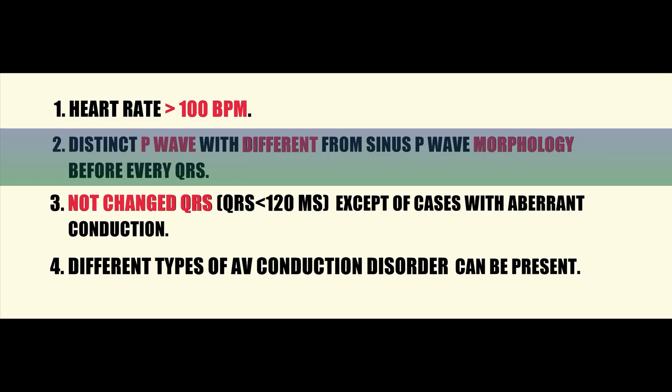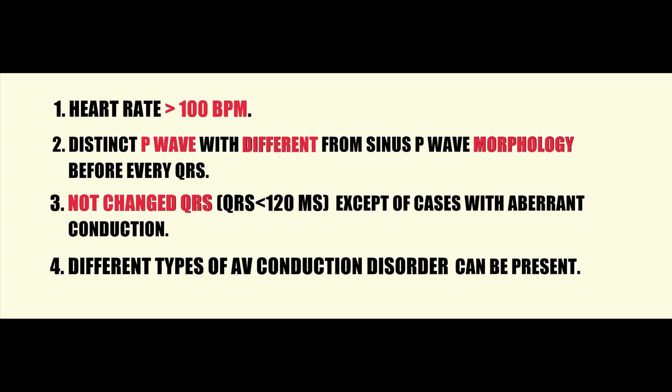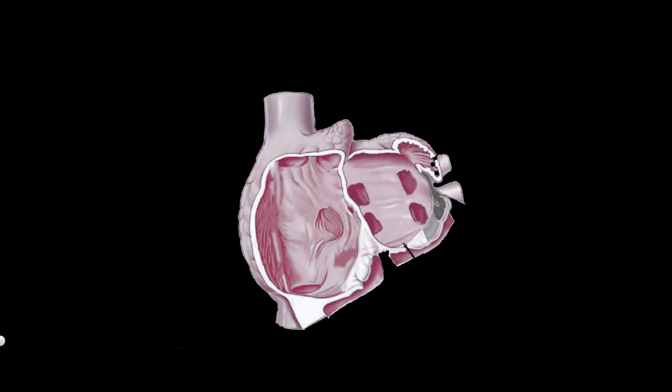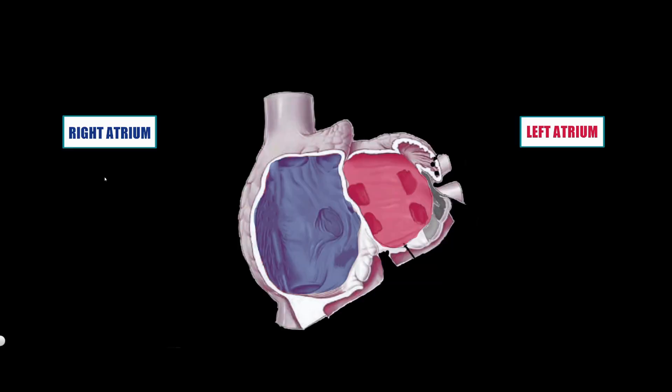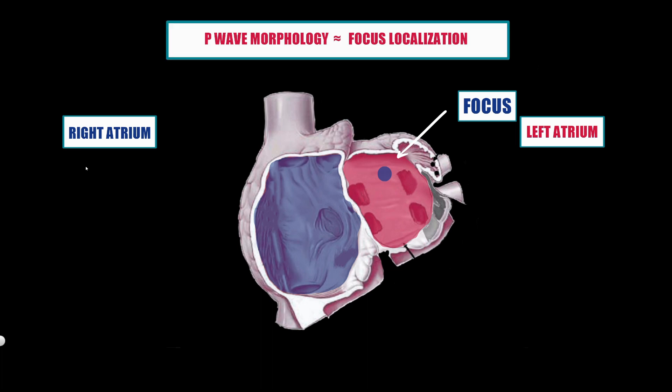The next criterion is P-wave morphology. In focal atrial tachycardia, impulse initiation occurs in a small circumscribed region of the atria known as the focus — hence these arrhythmias are called focal. P-wave morphology depends on the focus location, and it can be used to approximately localize the focus before an electrophysiological study.